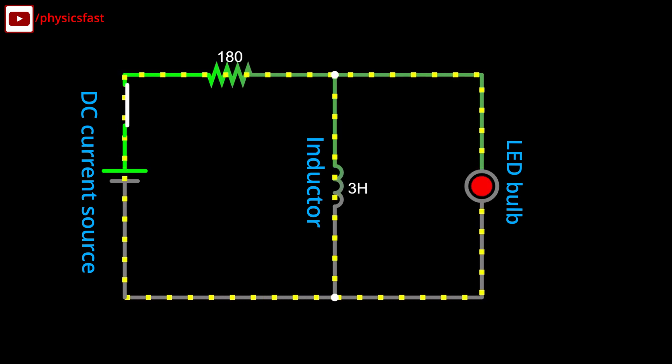If you give power to the circuit, the electrons will flow through the lamp, and the lamp will be on. At first, very little current will flow through the inductor, as the inductor will block the current.